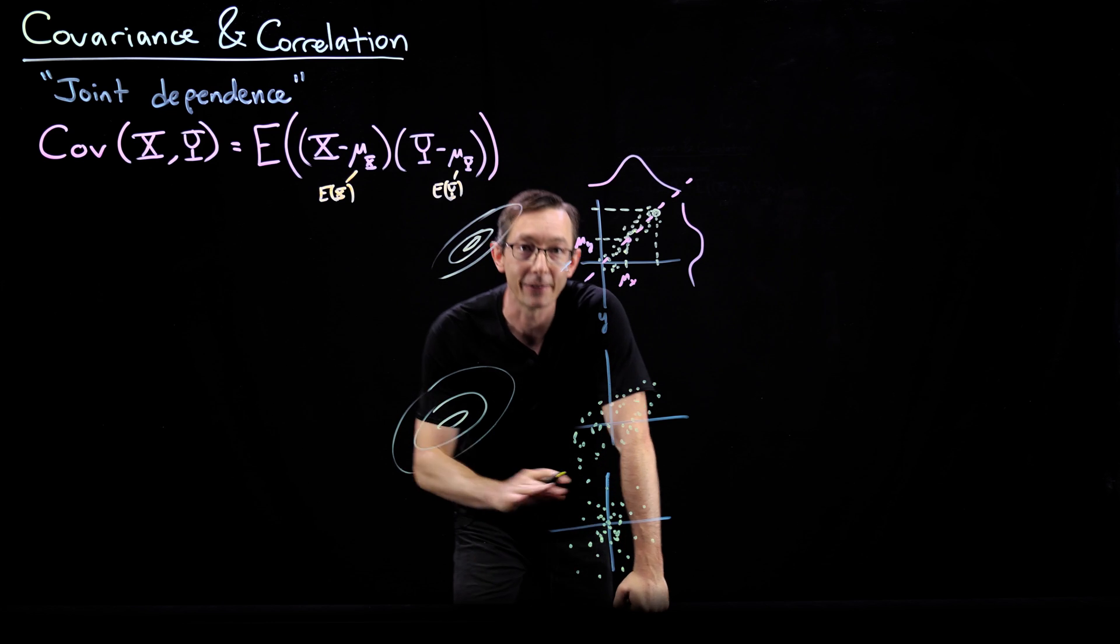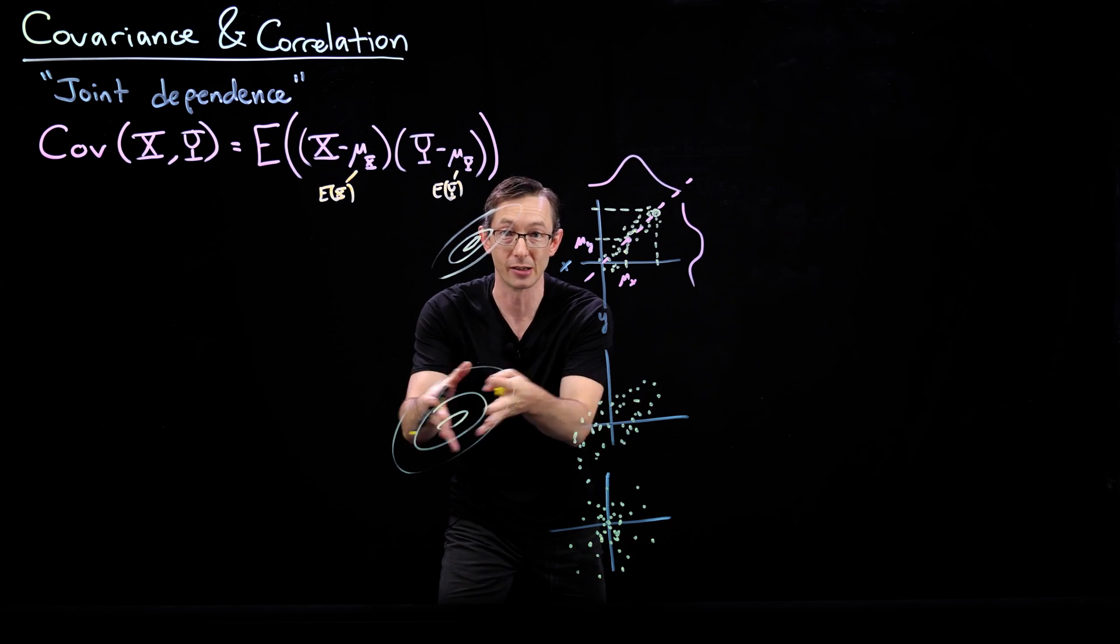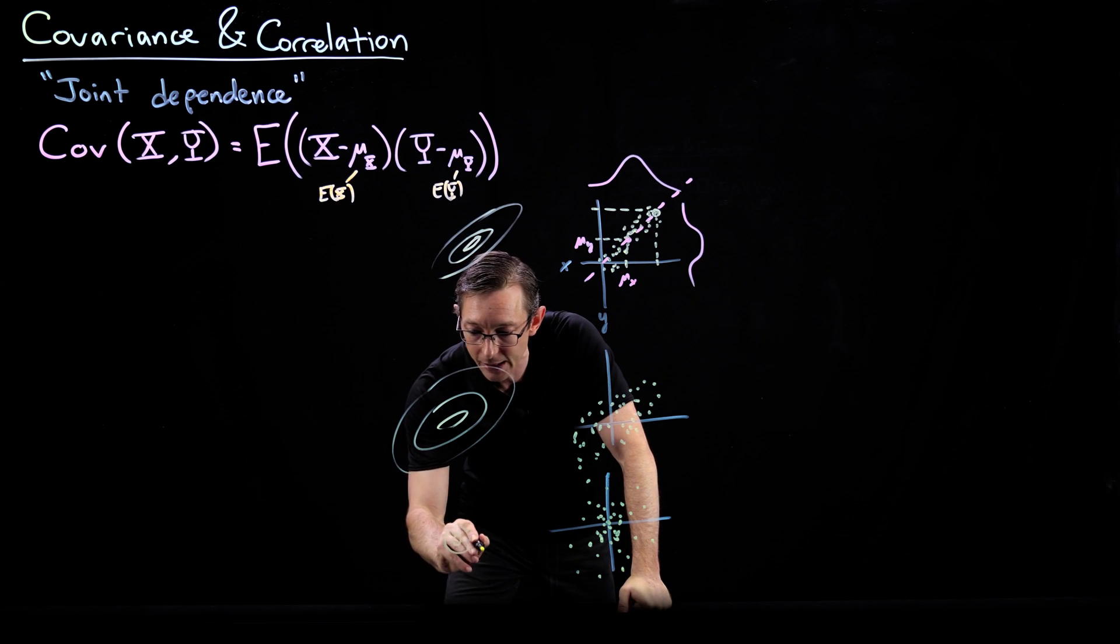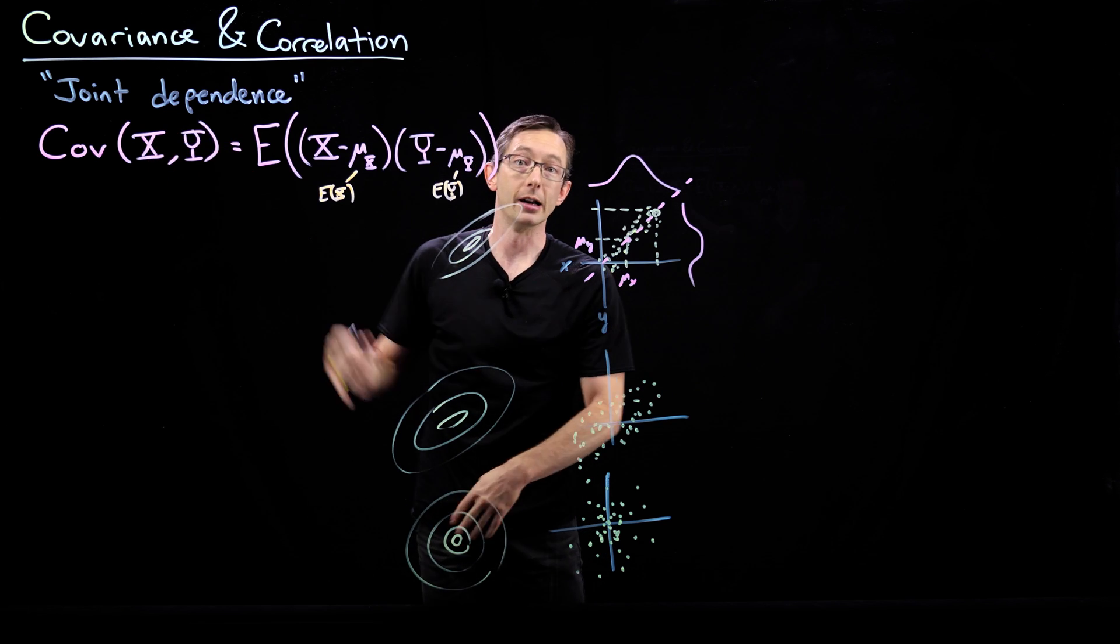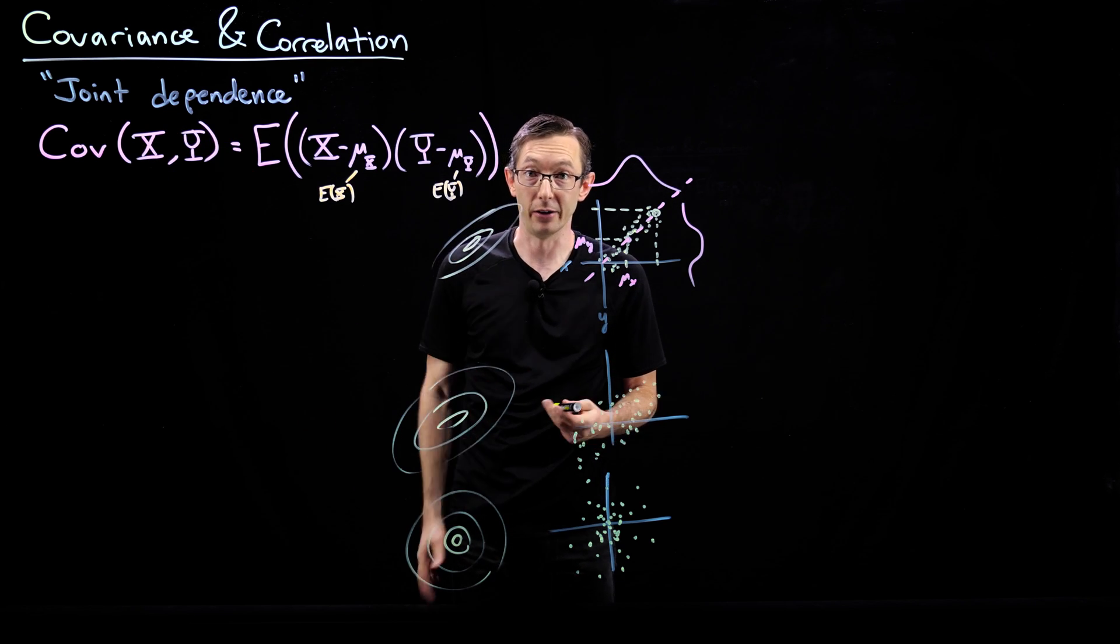And eventually if I have it be perfectly radially symmetric, so there's no preferred direction, there's no narrow direction, then x and y have zero covariance. They are, in fact, independent random variables.